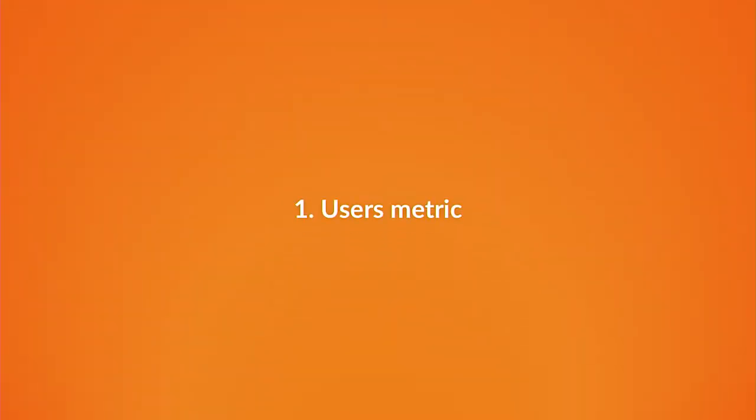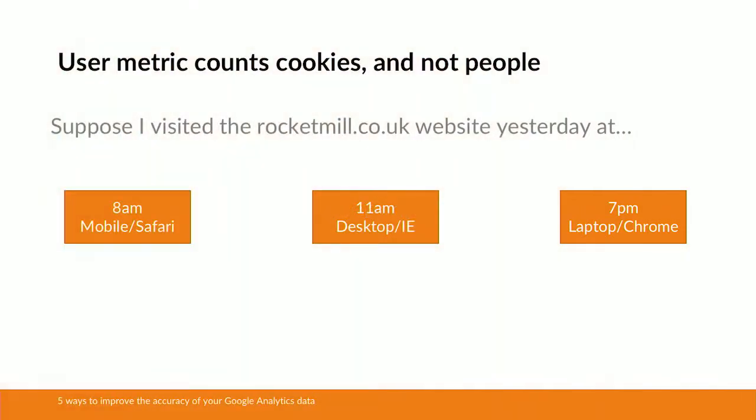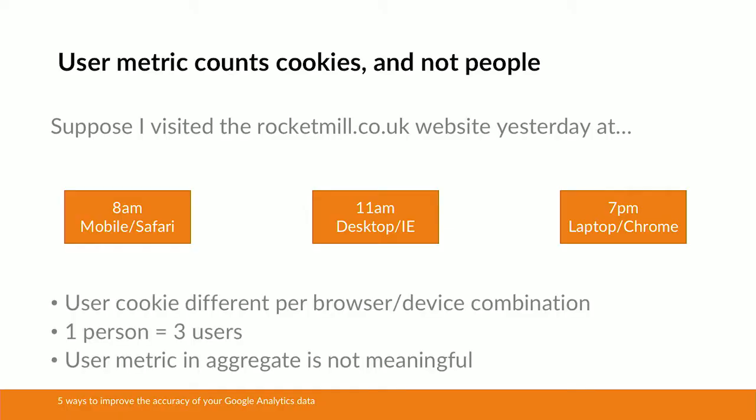I'm going to start with the users metric. The users metric actually counts the number of user cookies and it doesn't count the number of people. Take this scenario where I visited the Rocket Mill website yesterday on three separate occasions: first through mobile and Safari, then through desktop and Internet Explorer, and finally through laptop and Google Chrome. In each case I visited the site via a different browser and device combination, and whilst I'm one person visiting the site, I'm counted as three unique users in Google Analytics.